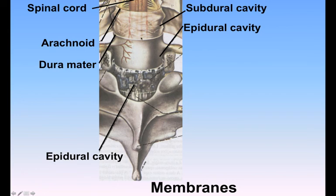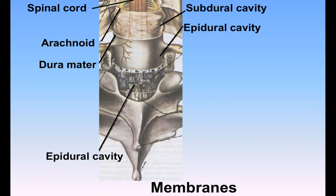The Duramater is a strong fibrous membrane which forms a wide tubular sheath. This sheath extends below the termination of the Medulla Spinalis and ends at a cul-de-sac at the level of the lower border of the second sacral vertebra. The Duramater is separated from the wall of the vertebral canal by the epidural cavity, which contains loose areolar tissue and a plexus of veins. Between the Duramater and the subjacent arachnoid is a capillary interval, the subdural cavity, which contains a small quantity of fluid, probably of the nature of lymph.